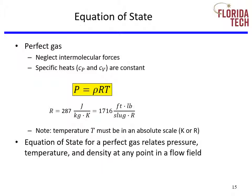A perfect gas is one in which intermolecular forces are assumed to be negligible, and its specific heats at constant volume and pressure, C sub P and C sub V, are constant. A true perfect gas does not exist; however, air may be treated as a perfect gas for most aeronautical applications. For a perfect gas, pressure equals density times R times temperature. R is the specific gas constant, a function of the gas considered. For nominal air, its value is 287 joules per kilogram times degree Kelvin. The temperature used in the equation must be absolute. The equation of state relates pressure, temperature, and density at any point in the flow field.